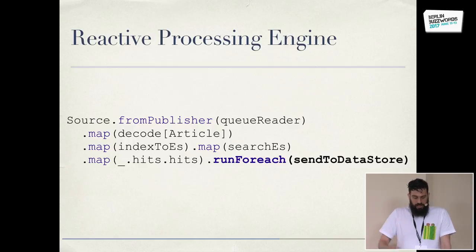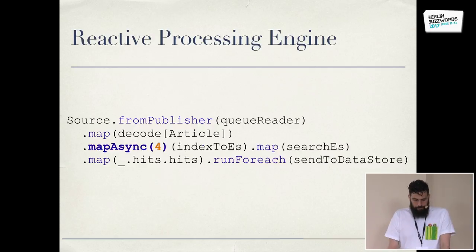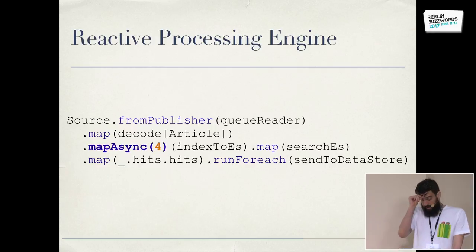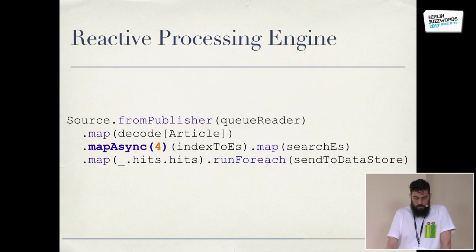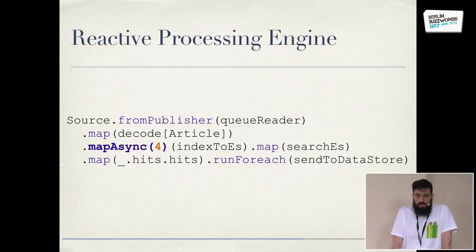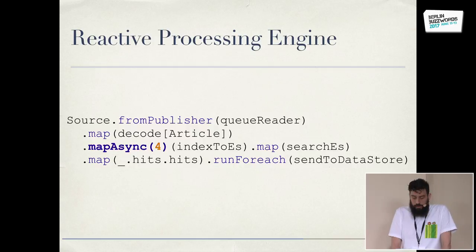The list of recommendations is then passed to the object store for immediate retrieval. Since indexing the articles and searching for them have no dependency on each other, we can tell Akka Streams that this part could be done in parallel — so we just change map to mapAsync. Easy.